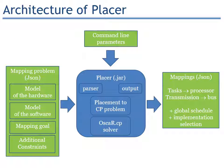This is the technical architecture of Placer. Placer itself is a JAR file, so you need the Java environment to run it. It inputs a single JSON file, has some command line parameters, and generates everything into a JSON output file with no other configuration to consider. The input file includes the model of the hardware, the software, the mapping goal, and the additional constraints. The command line defines mostly search parameters such as time limit and the kind of search engine you want to use. You can use pure CP or LNS procedure, for instance. Everything is defined in JSON format for simplicity and ease of integration.